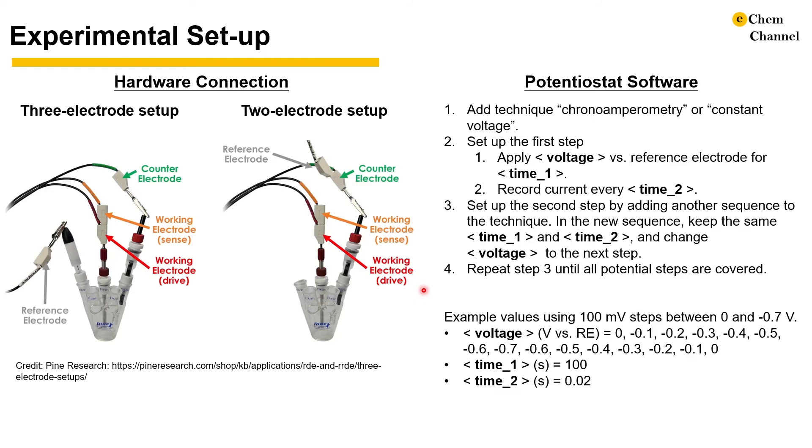It may sound abstract, so here is an example. If we would like to perform MUSCA between 0 and negative 0.7V versus a reference electrode with 100mV potential steps, we will set up 15 sequences with the following potential values as the steps. We can hold the potentials for 100 seconds to make sure the system reaches equilibrium and collect data every 0.02 seconds.